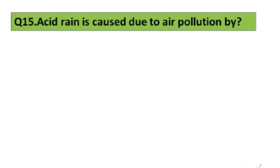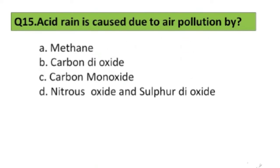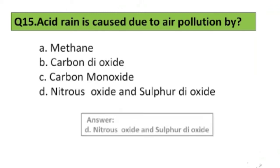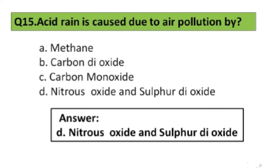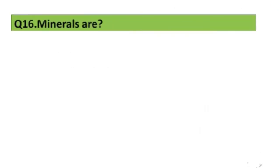Question number 15. Acid rain is caused due to air pollution by: A. Methane, B. Carbon dioxide, C. Carbon monoxide, D. Nitrous oxide and sulfur dioxide. The right answer is option D, Nitrous oxide and sulfur dioxide.